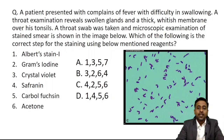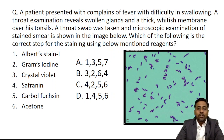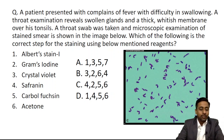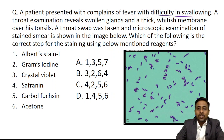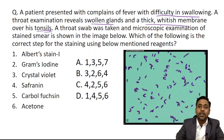The MCQ asked: a patient presented with complaints of fever with difficulty in swallowing. A throat examination reveals swollen glands and a thick whitish membrane over his tonsils. A throat swab was taken and microscopic examination of a stain is shown in the image below. This case seems to be difficulty in swallowing, swollen glands, thick whitish membrane — very easy to diagnose if you have gone through the video of Corynebacterium diphtheriae.